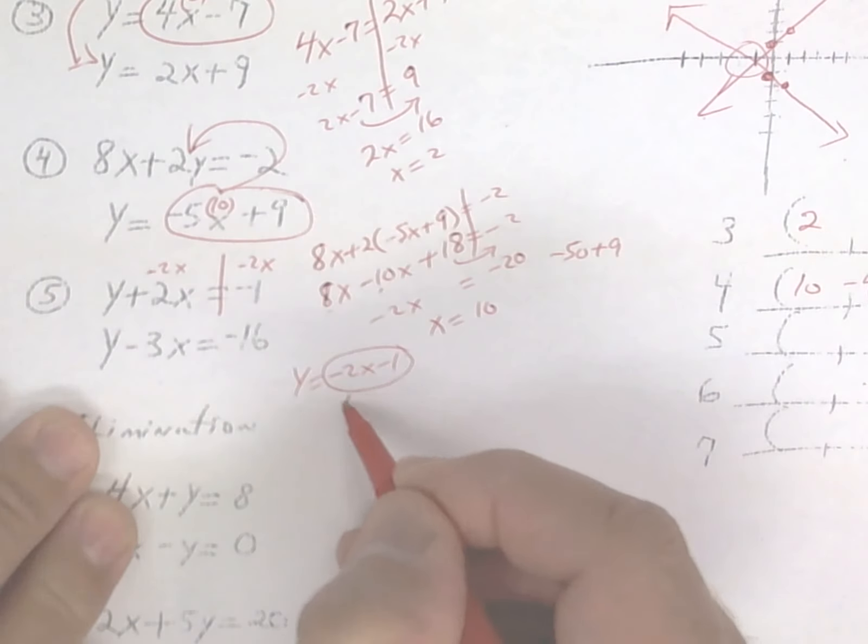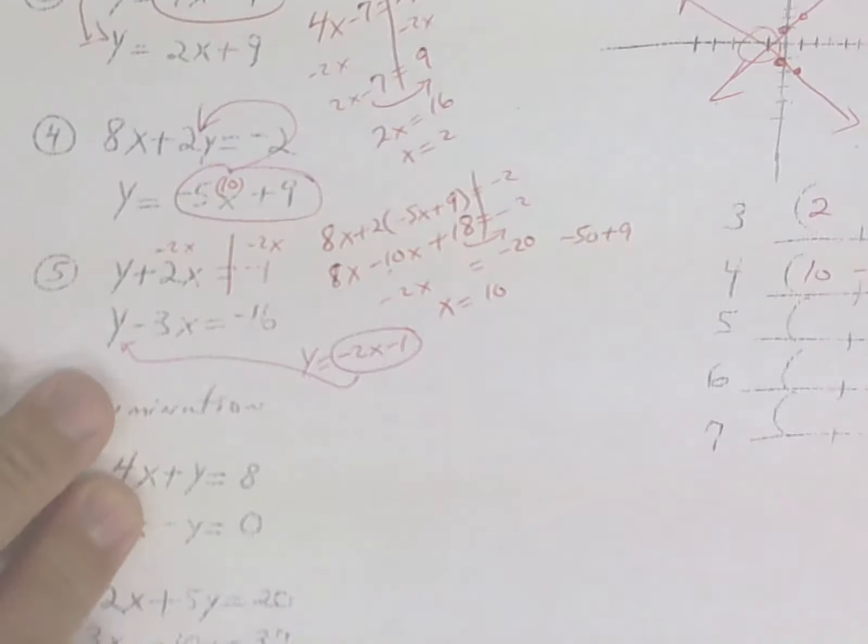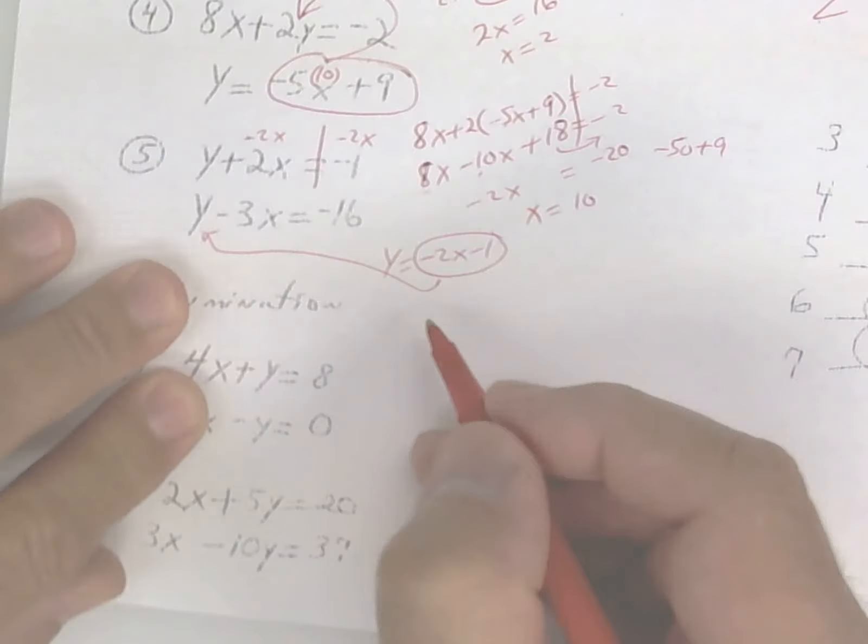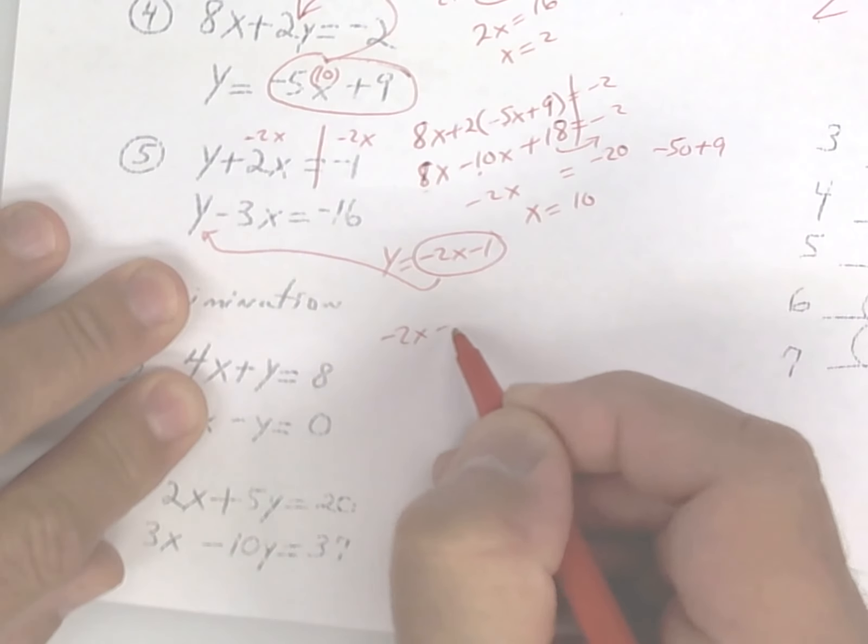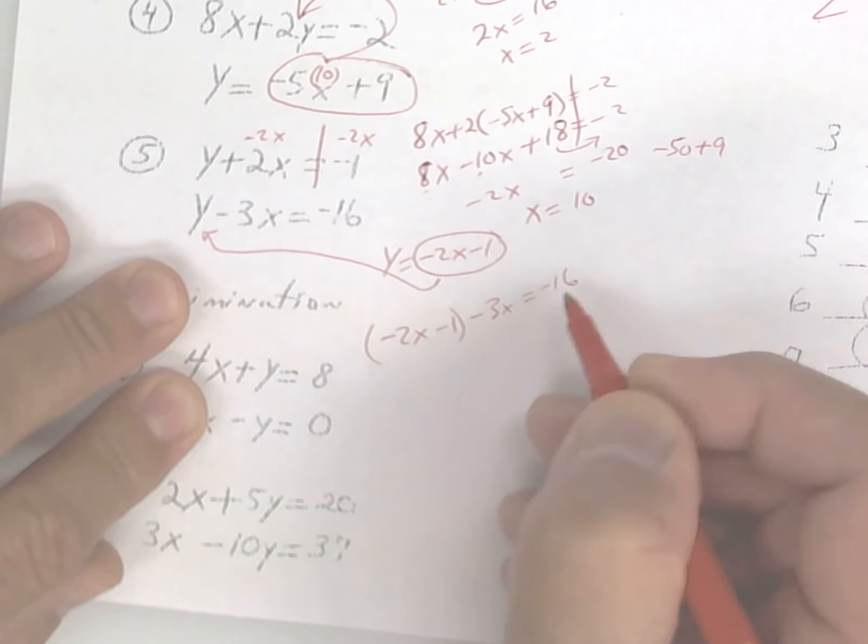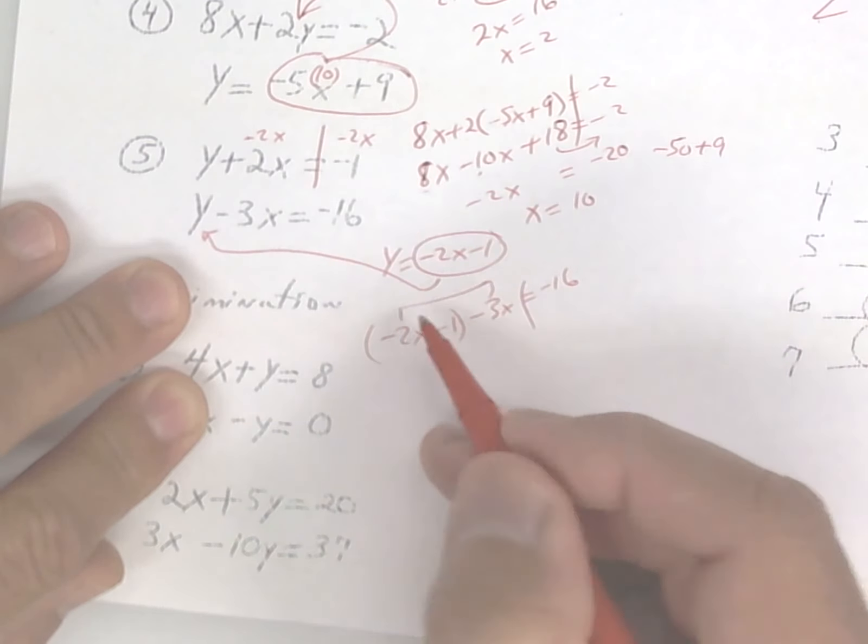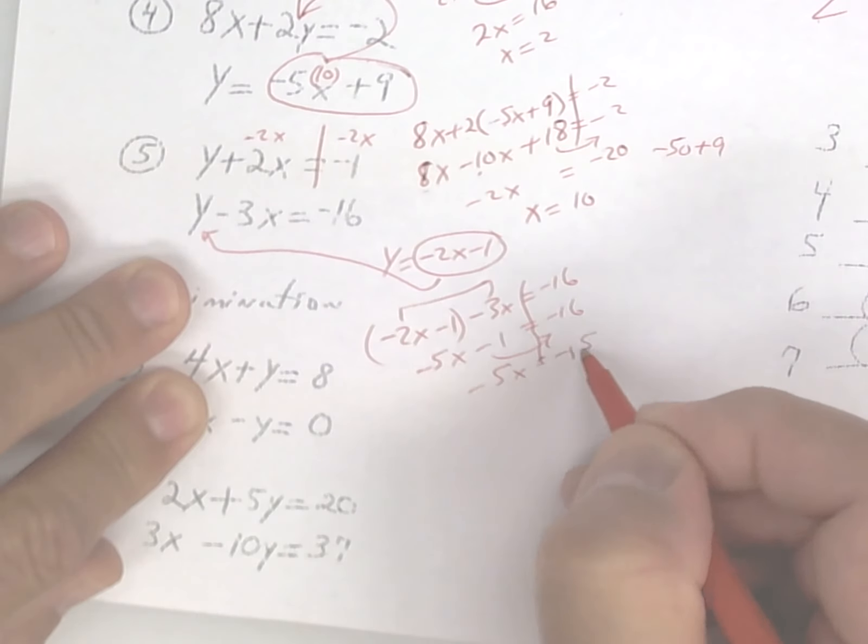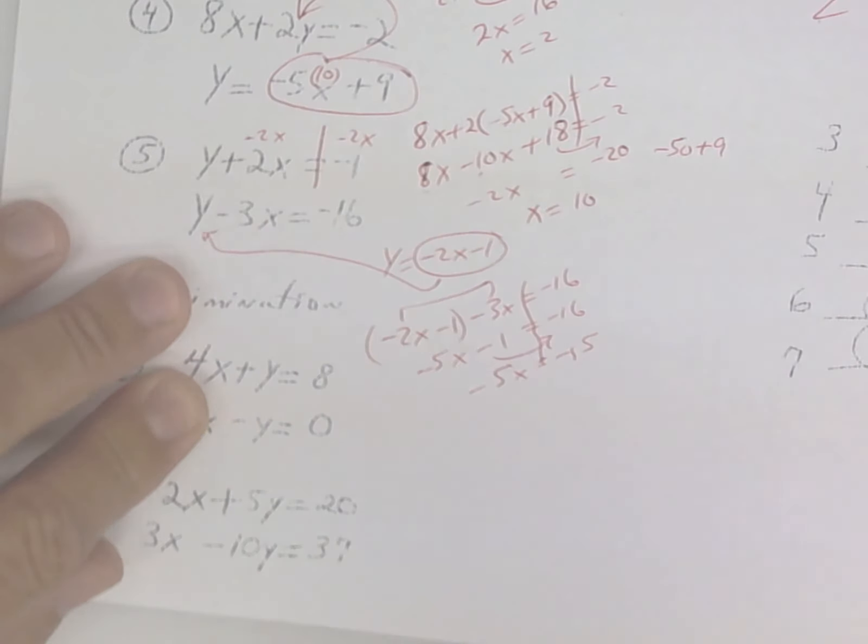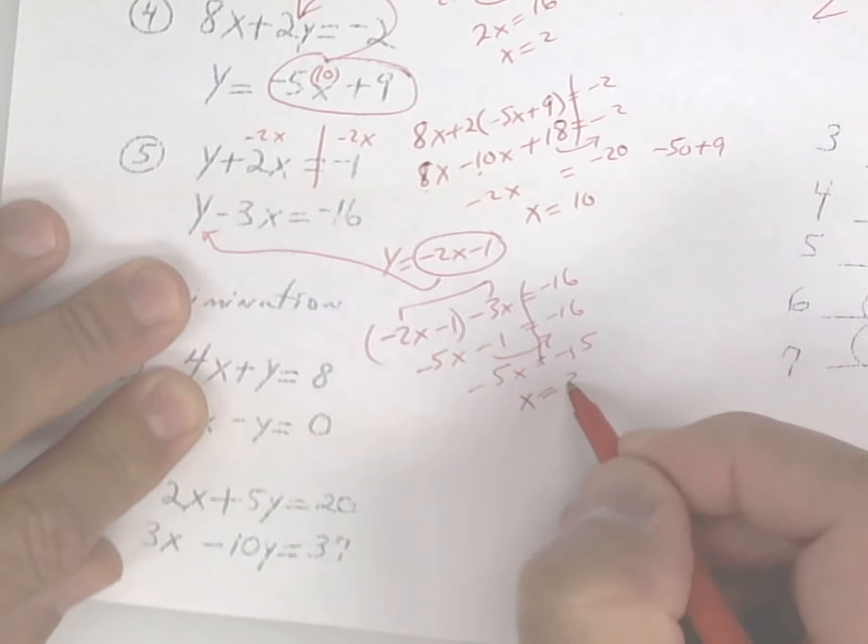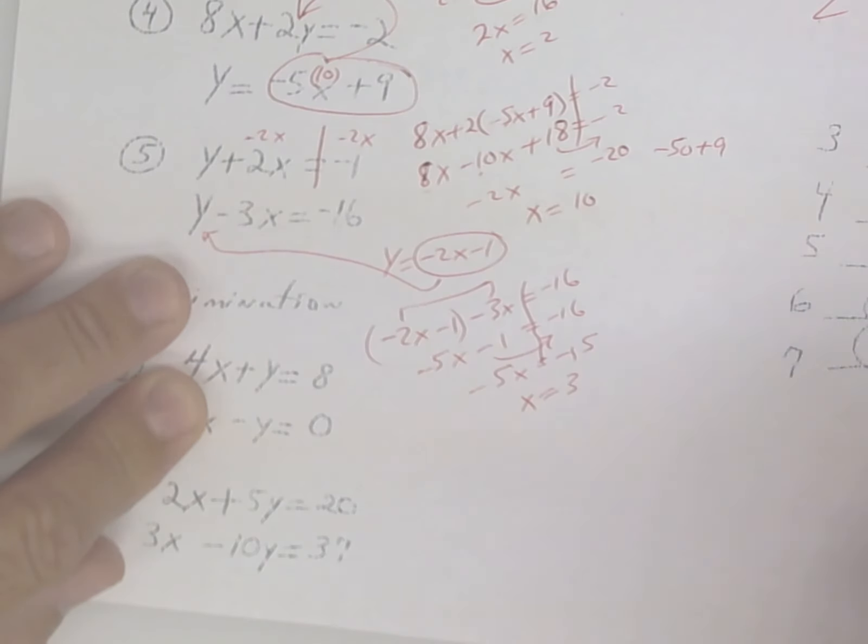Take all of this and substitute it in place of the y. So you're going to get negative 2x minus 1 minus 3x equals negative 16. This gives me a negative 5x. I'm going to add 1 to the other side, so I get negative 5x equals a negative 15. And I'm going to divide by negative 5 and get x equals 3. A negative divided by a negative is a positive.